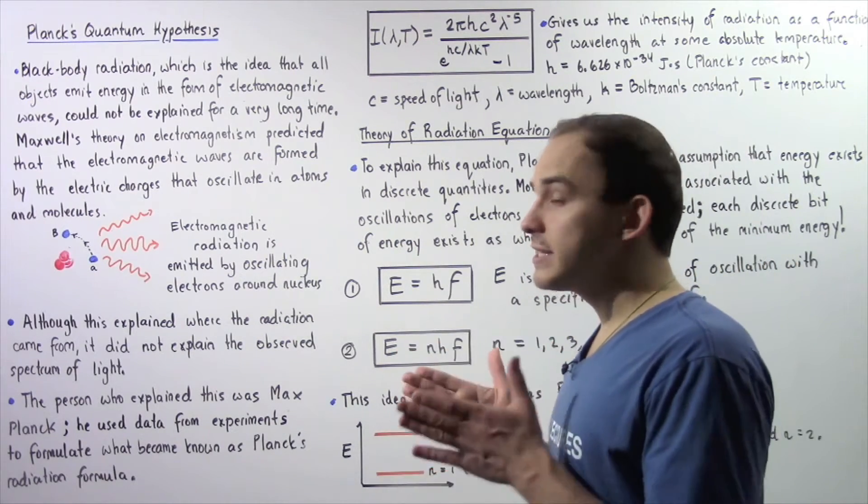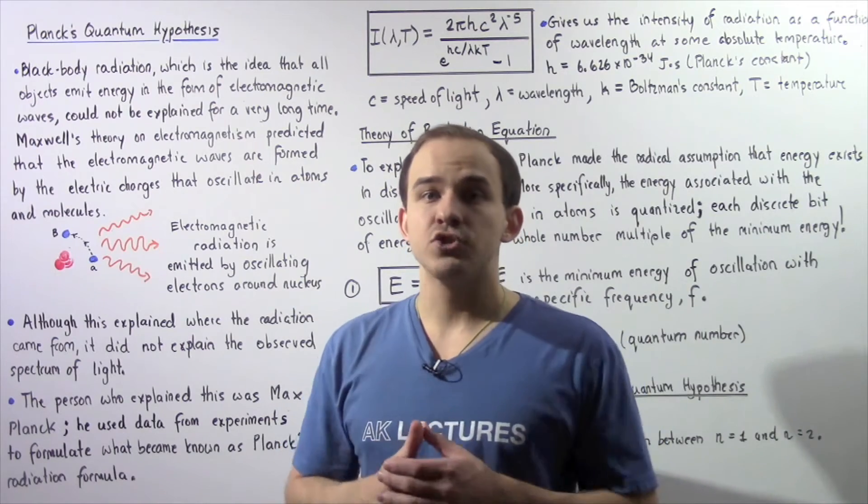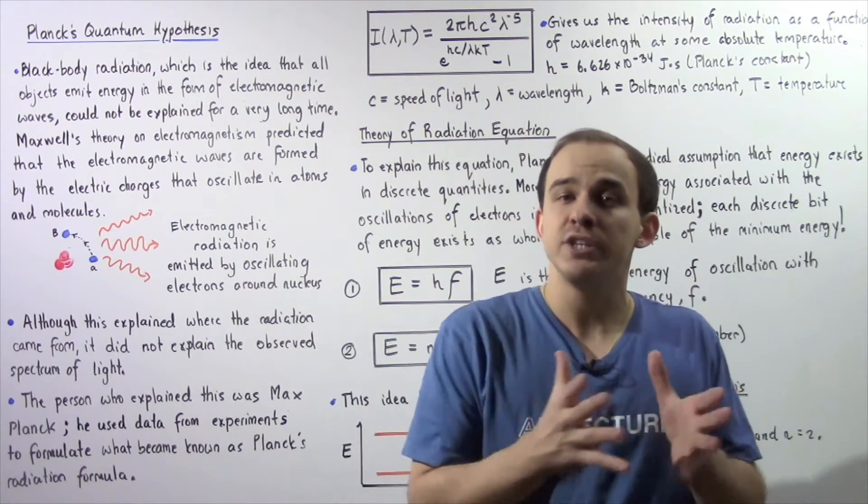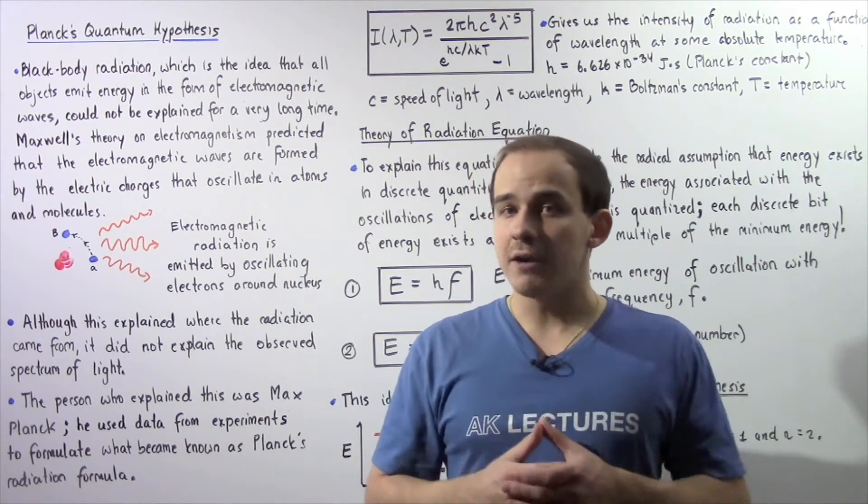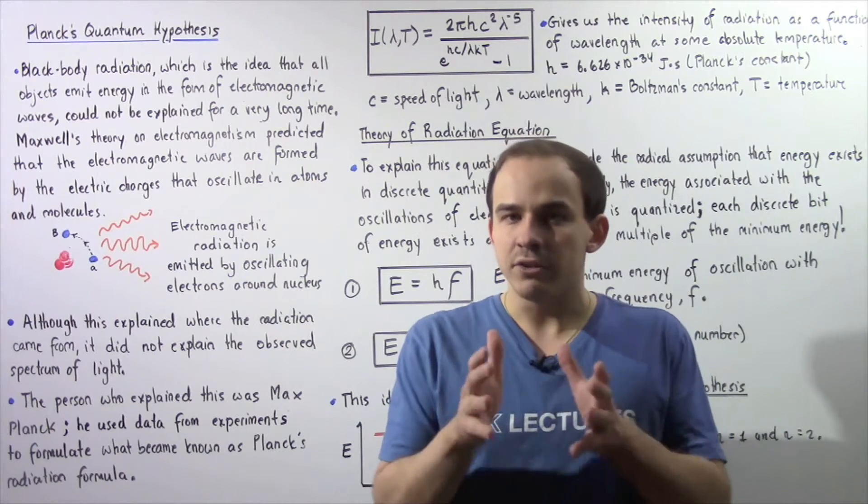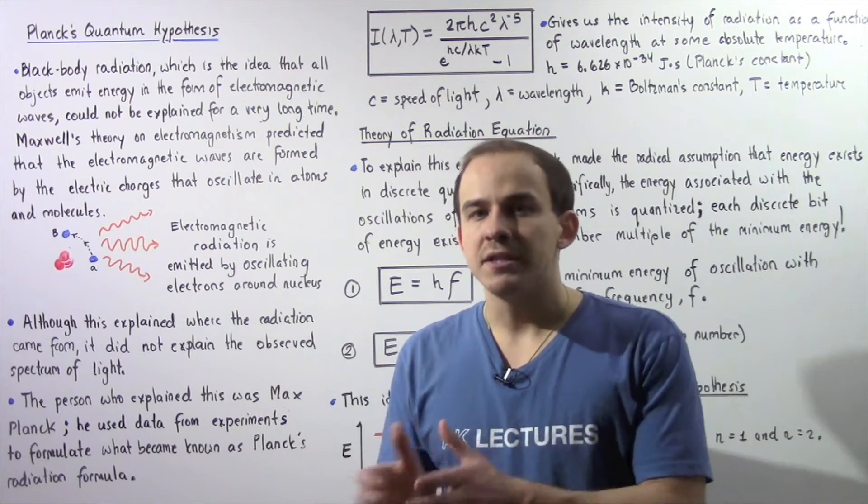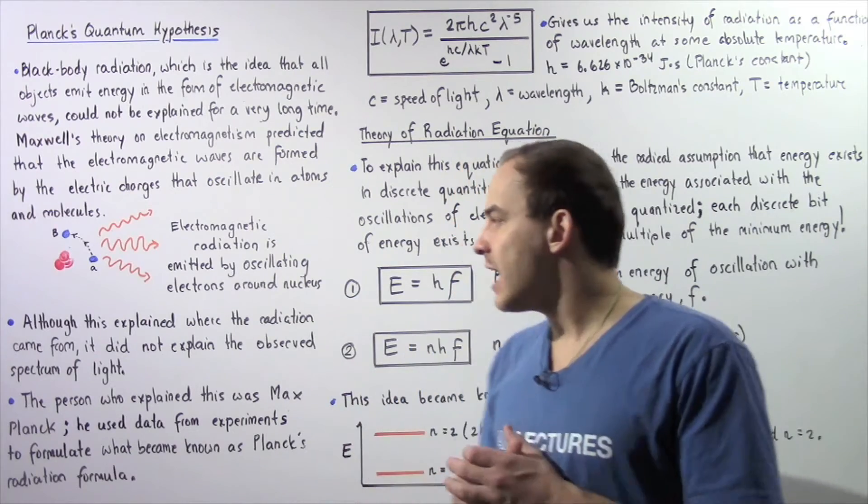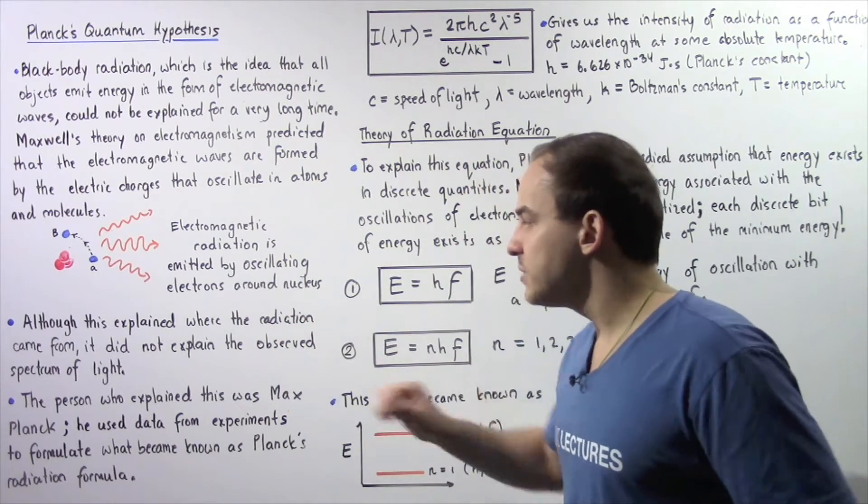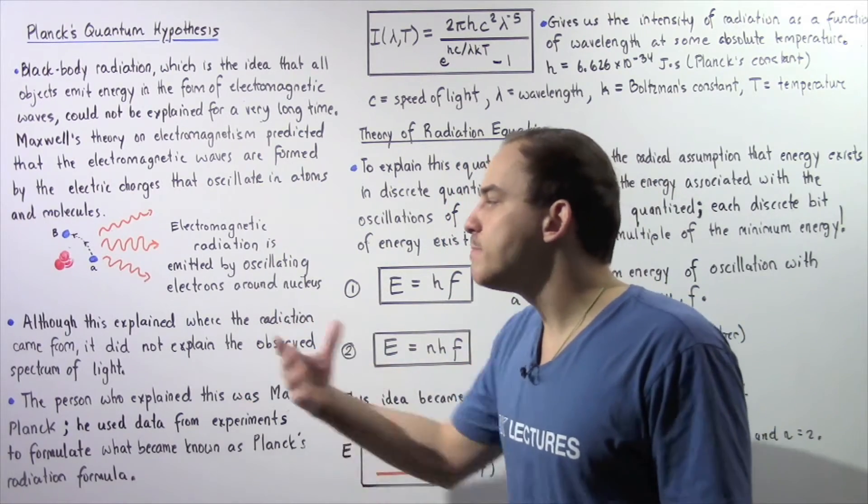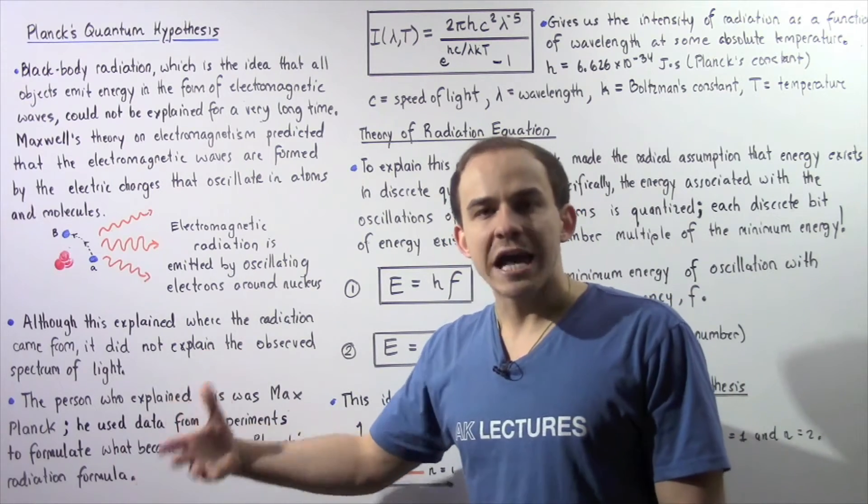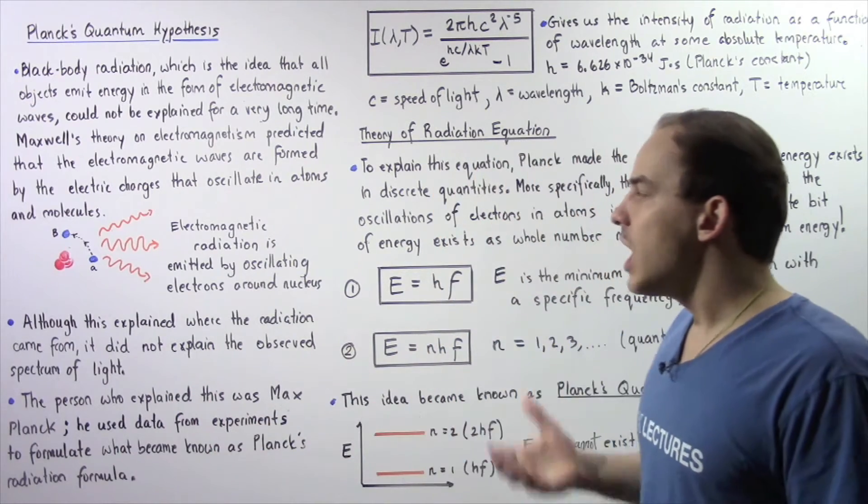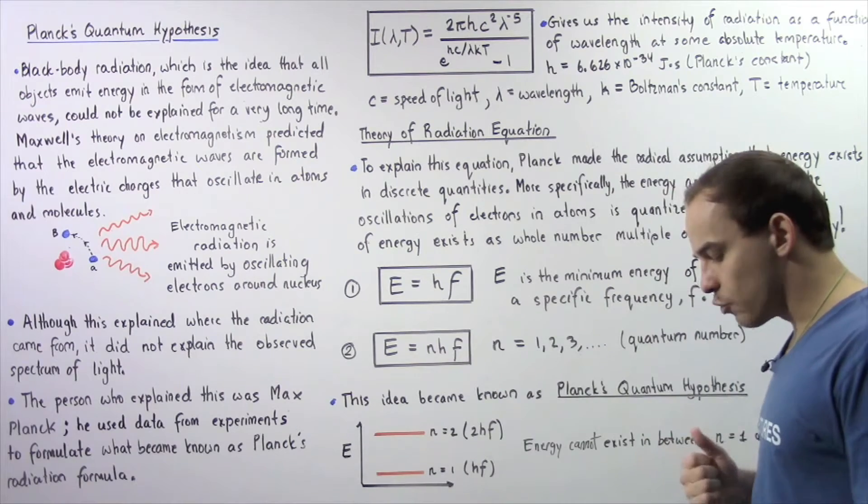Now although this theory explained where the electromagnetic radiation actually came from within the object, it did not entirely fit with the experimental results that were obtained at that time. So it could not explain the observed spectrum of colors that were produced as a result of this emission of radiation.